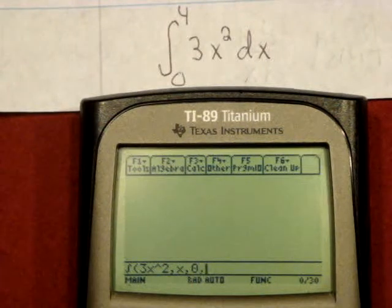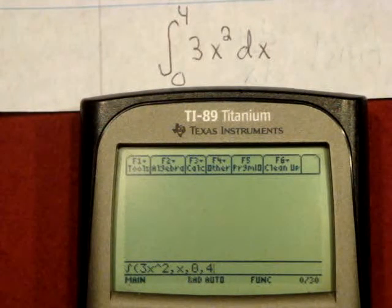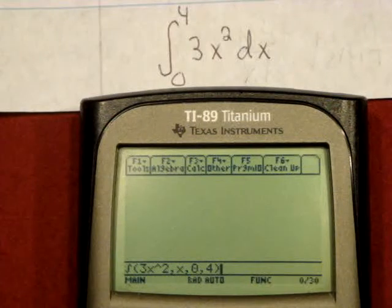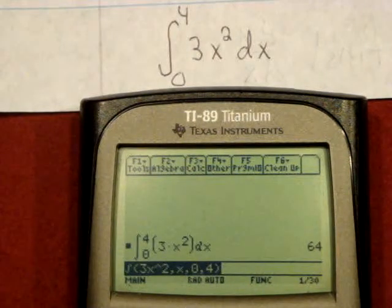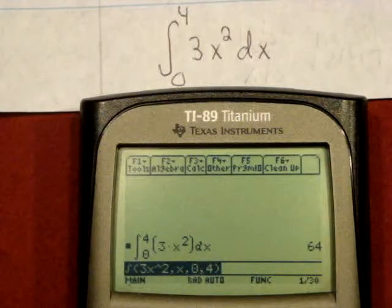Another comma, enter the upper bound, close the parentheses, and complete. The integral of 3x squared dx evaluated from 0 to 4 is 64.